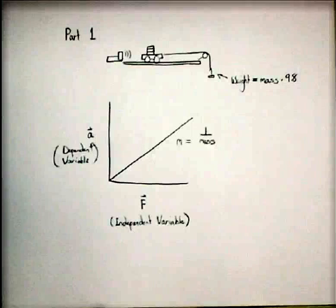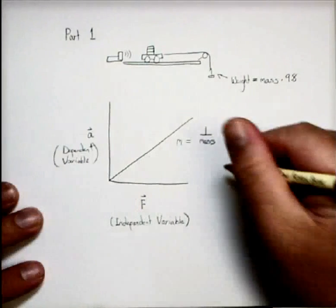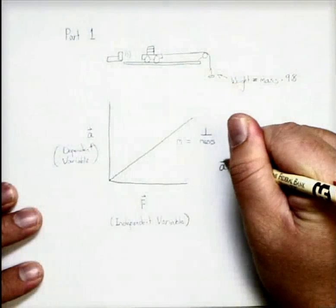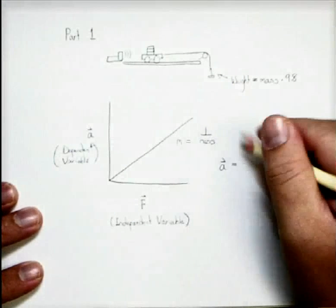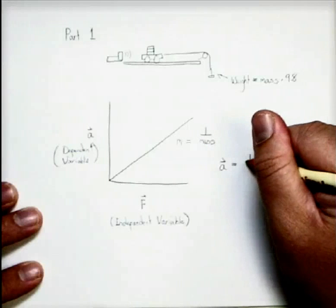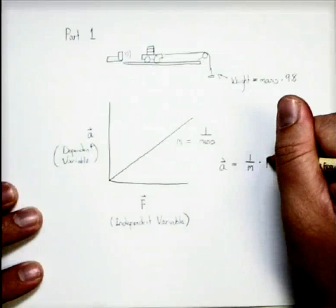Let's just go ahead and dive right into it. If we were to write an equation for this line, we would say that the acceleration is equal to the slope, so that's 1 over the mass times the force.